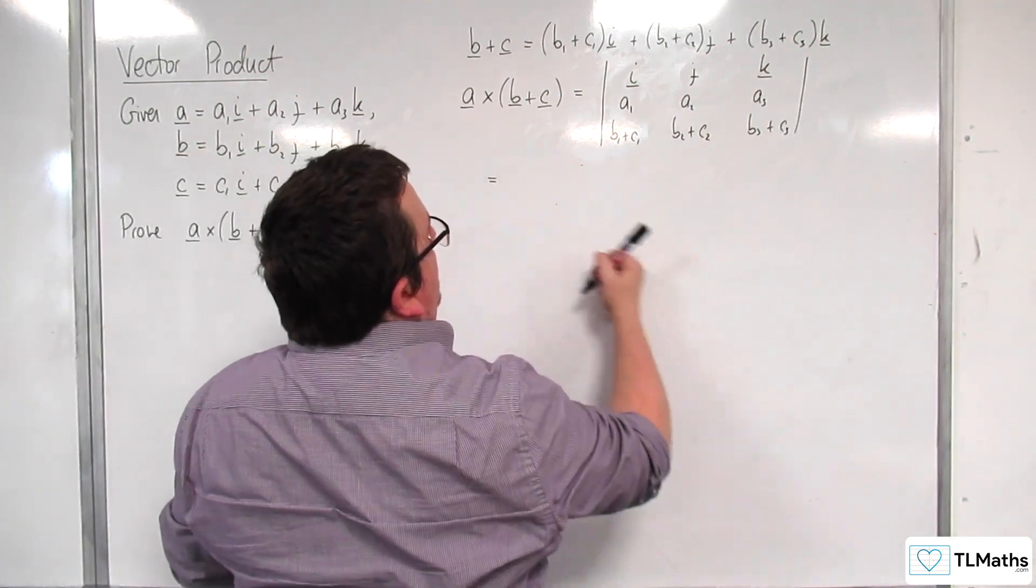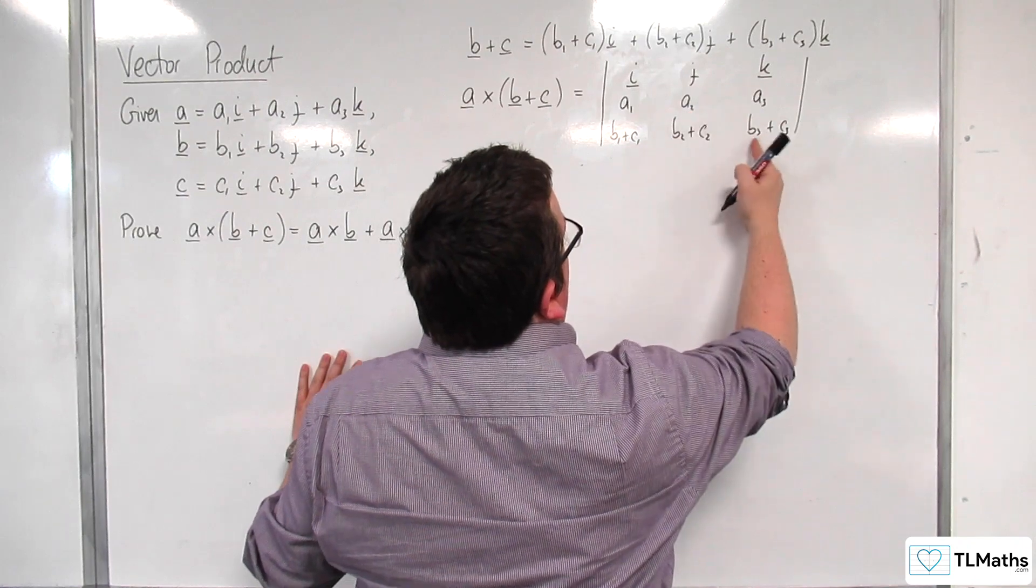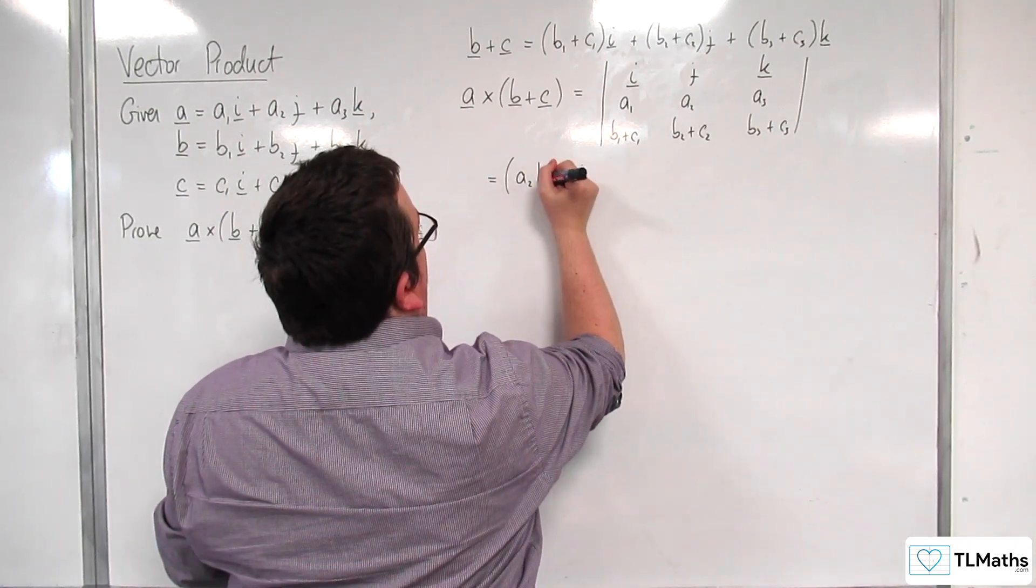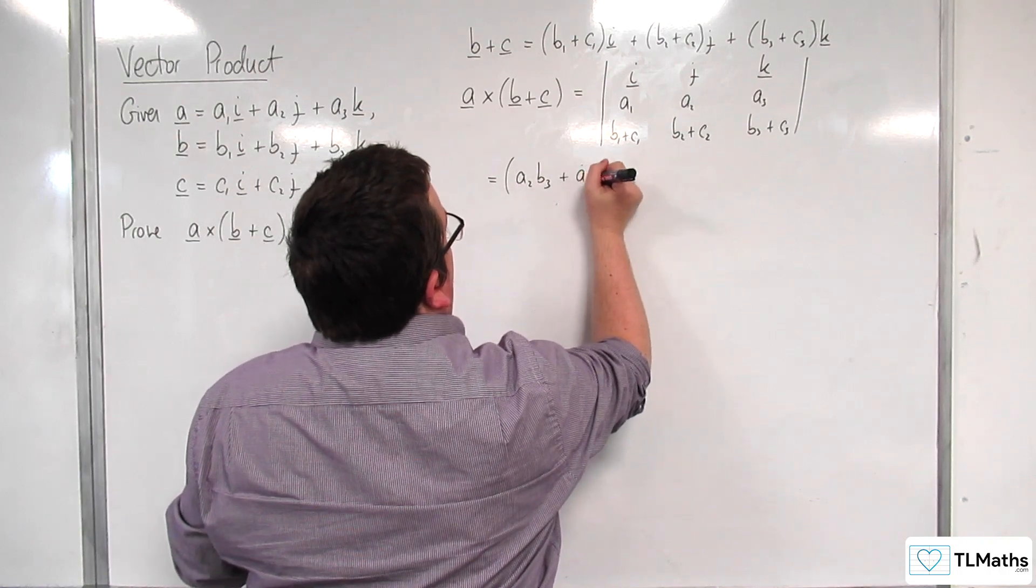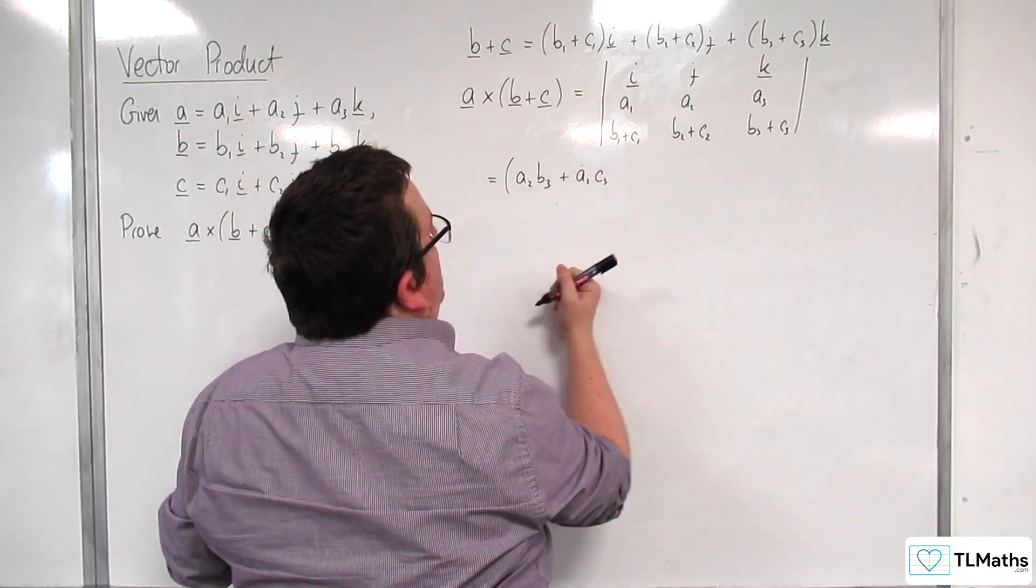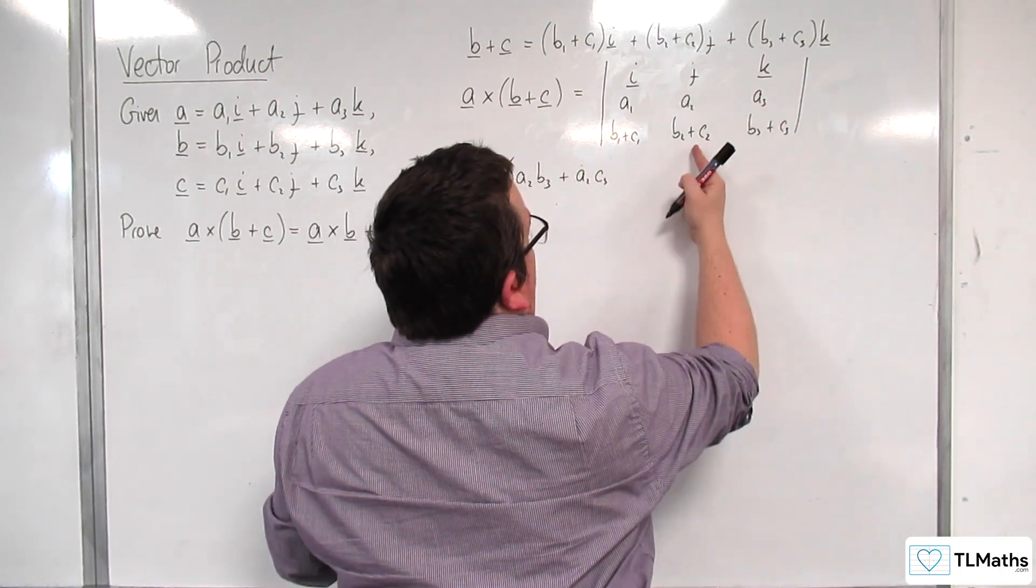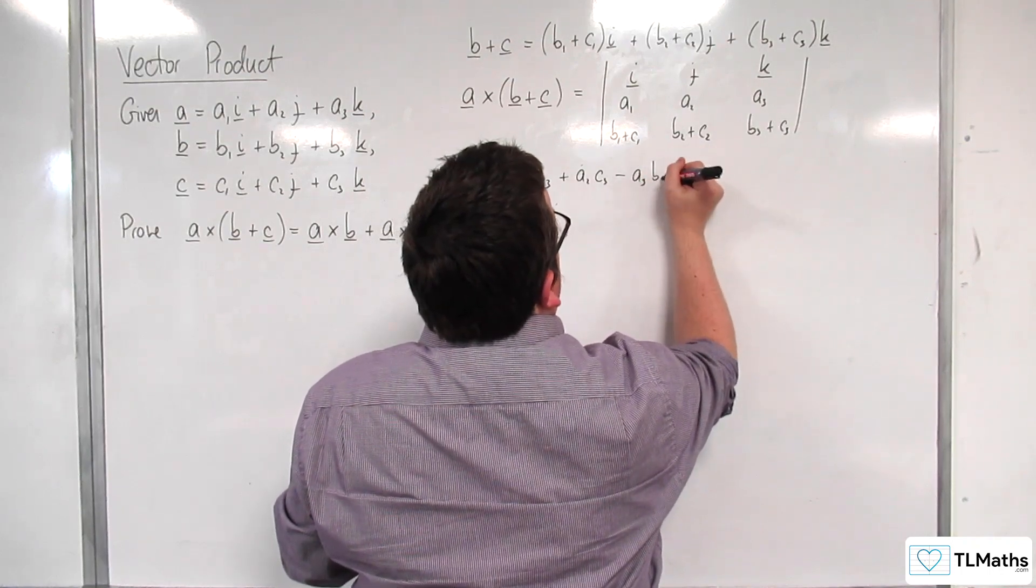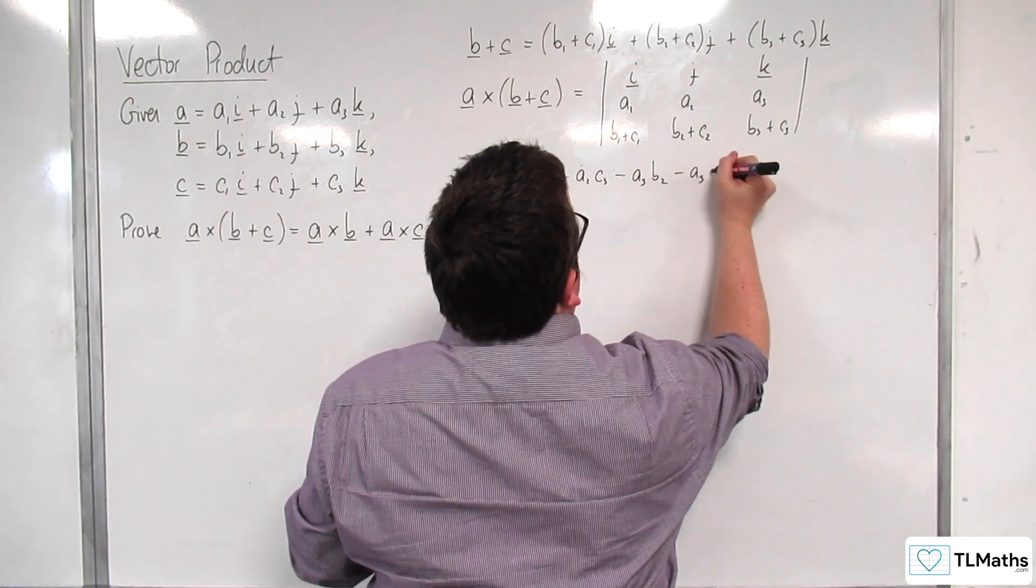So here we would have a2 times b3 plus c3. So a2b3 plus a2c3, and then take away a3 times b2 plus c2. So take away a3b2, take away a3c2 i.